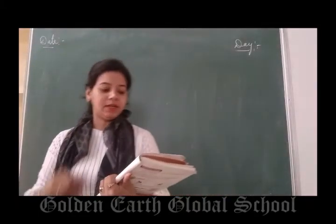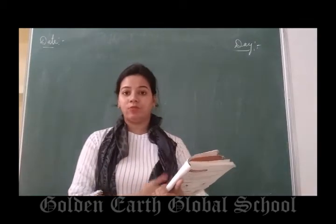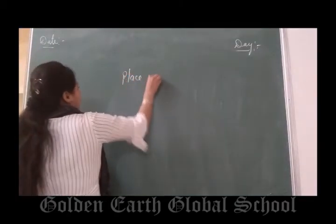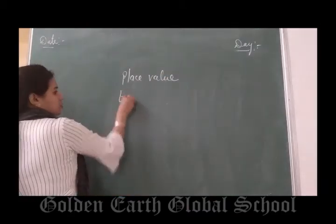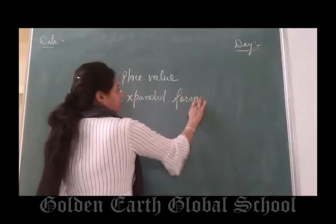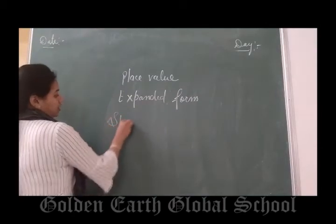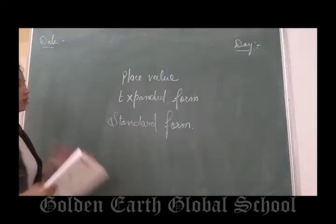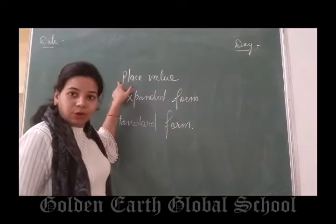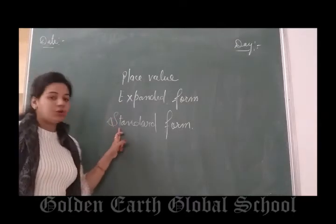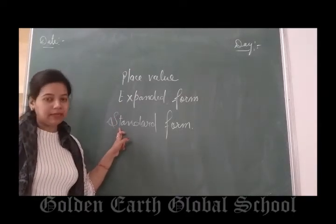Good morning all of you. Today we will start Exercise 1.2. In Exercise 1.2 we will learn about place value, expanded form — how you can write the expanded form and how you can write the standard form. How you can find the place value of any digit? How you can write the expanded form of a number? How you can write the standard form of any number? Okay.